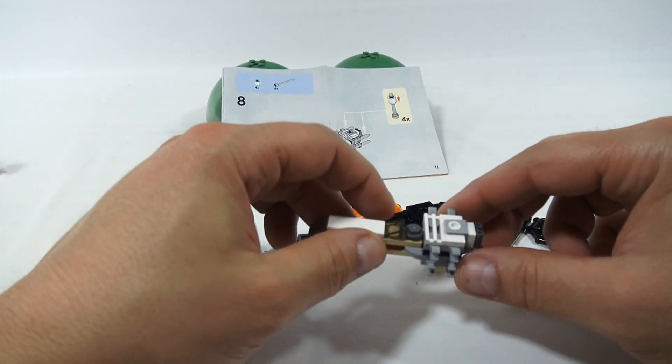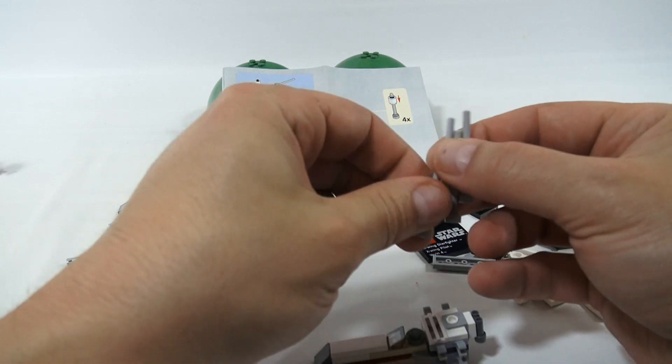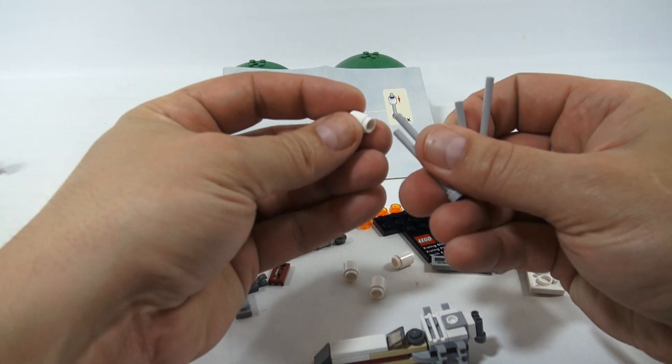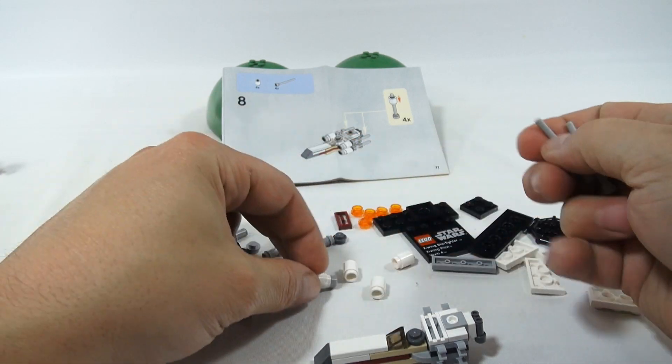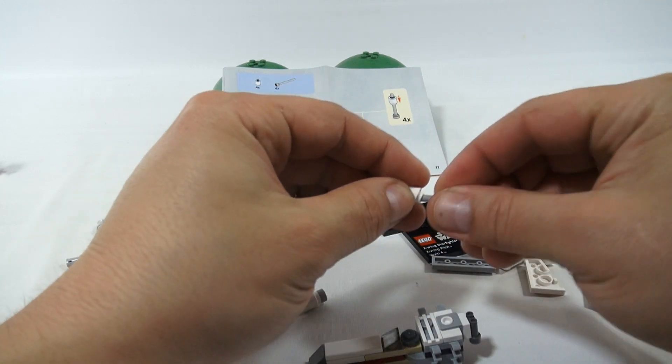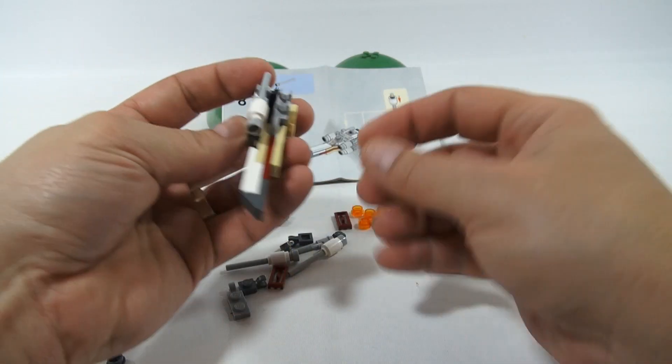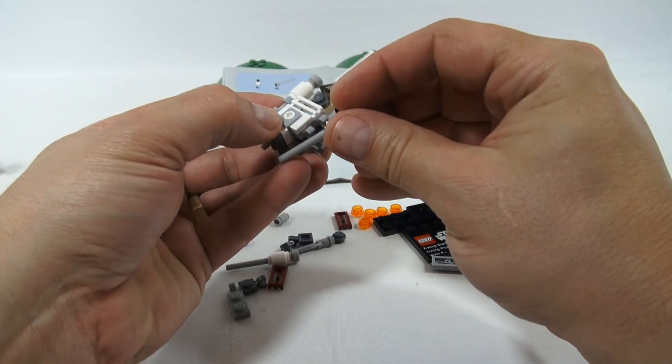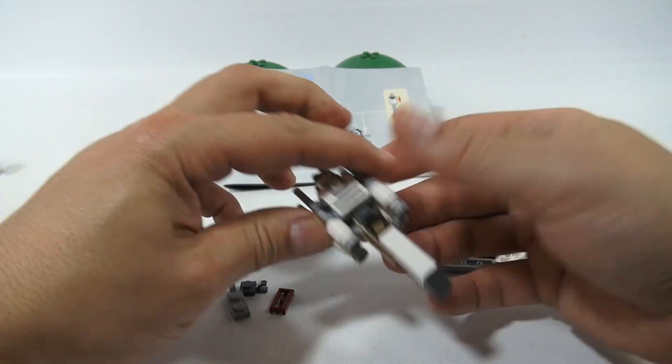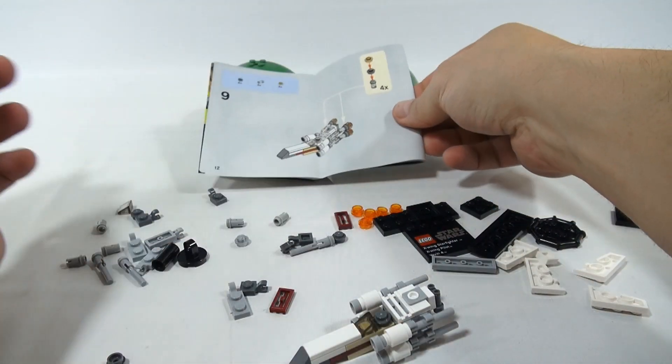You ever put a whole set together and realize you missed a piece or you put something together wrong? Well, I have. So this is four times it says. So we'll get these four and then the four round sleeves. And they look like they just all slide over. And they slide into here. Looks like we're getting there.